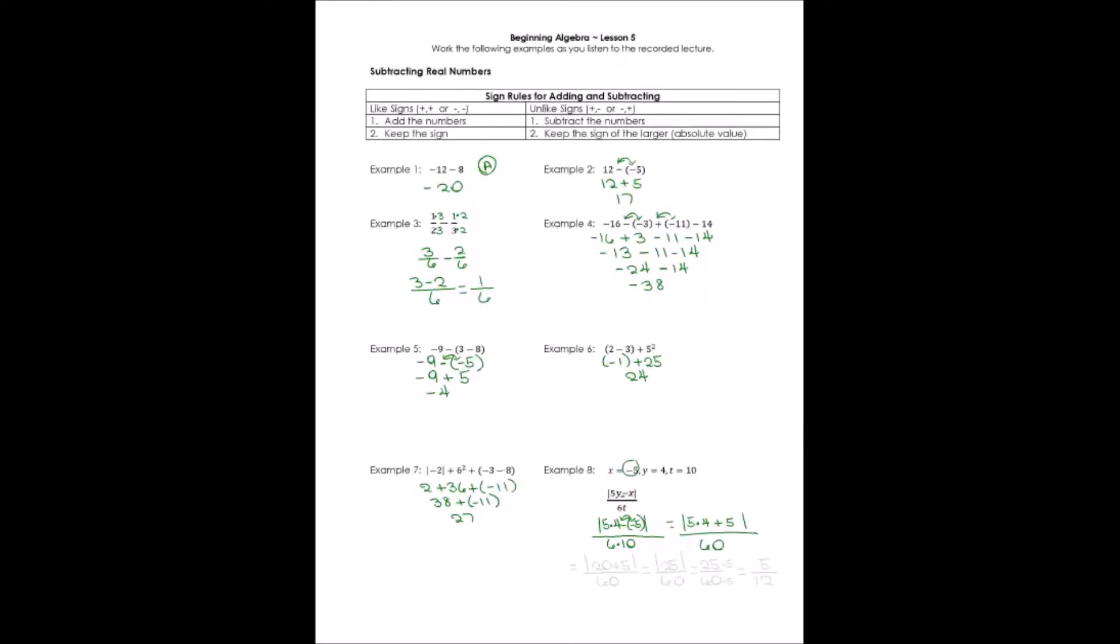And then in the numerator I've got multiplication, I've got addition. I can't ever do absolute value until I have just one number inside the absolute value sign. So I'm going to do multiplication first. It's going to be the absolute value of 20 plus 5 over 60.